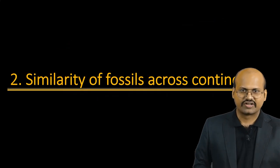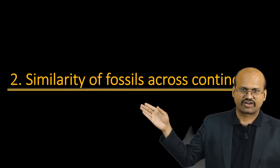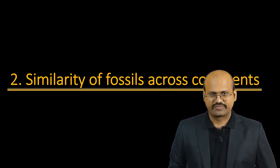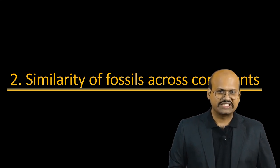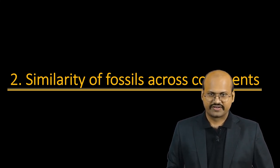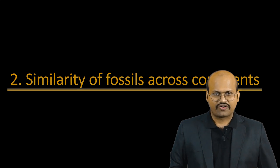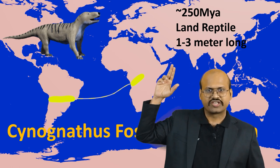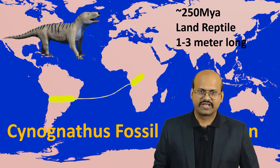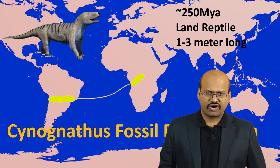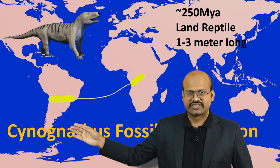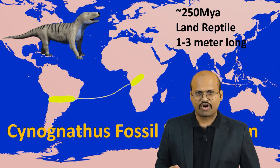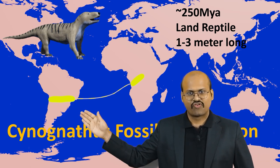The second evidence was similarity of fossils across continents. Wegener found a paper which talked of fossil distribution of four organisms. The first fossil was of Cynognathus, a land reptile around 1 to 3 metres long which existed around 250 million years ago. Fossils of Cynognathus were found in South America and Africa, but it was not possible for a small land reptile to cross the vast Atlantic Ocean.